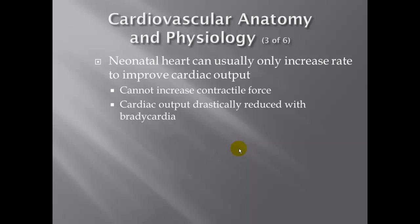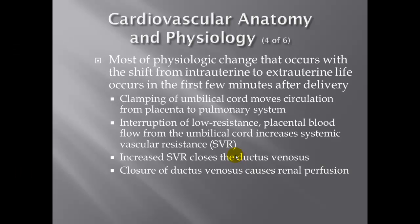A neonate's heart can usually only increase rate to improve cardiac output — it cannot increase contractile force or strength. Cardiac output drastically reduces with bradycardia, which can be fatal in a neonate. Most physiological change with the shift from intrauterine to extrauterine life occurs within the first few minutes after delivery. Clamping of the umbilical cord moves circulation from the placenta to the pulmonary system. This increases systemic vascular resistance, which closes the ductus venosus — the input feed on the inferior vena cava — causing renal perfusion as organs start becoming perfused.